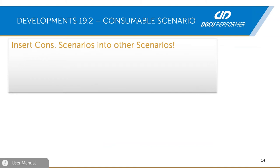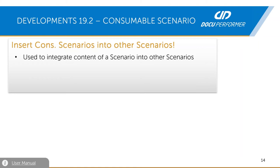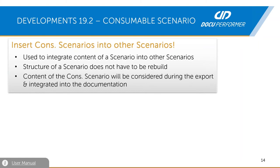In the new version, there is a new possibility to combine existing scenarios with each other — the so-called consumable scenarios. When creating a scenario, you can select which type it should have: consumable or standard. Scenarios of the type consumable can be added into scenarios of the type standard. The big advantage is you don't need to rebuild the structure of an available scenario — you can just add it into an existing one.